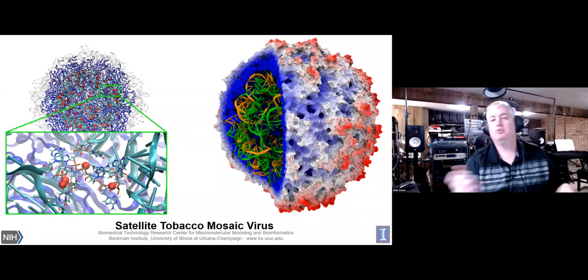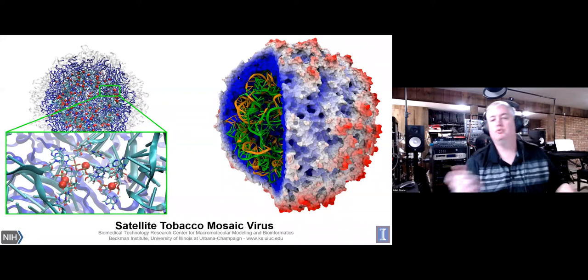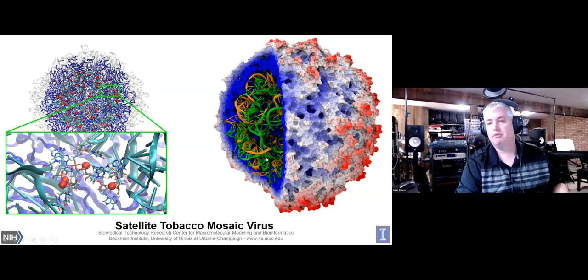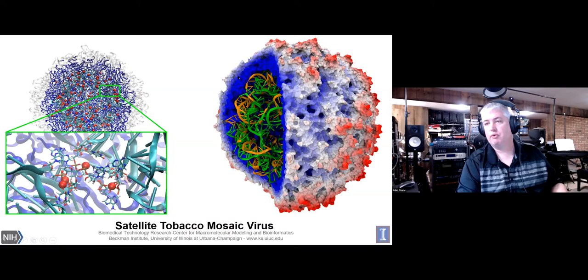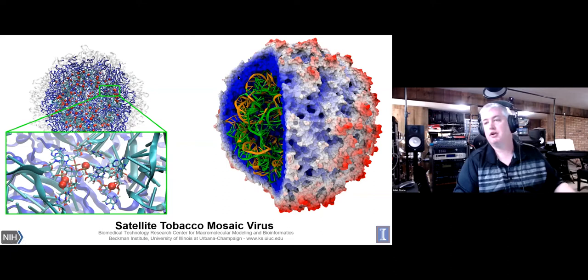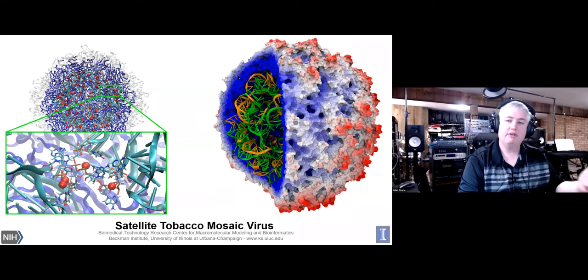Applying that technique to a normal rendering, we see the satellite tobacco mosaic virus with its normal coloring — RNA reinserted in the capsid center, radial coloring on the capsid itself, different colors for the two RNA strands. The ambient occlusion lighting gives nice shadows in the deeper pockets and pores, which are interesting as potential binding sites or places where ions permeate through the capsid.